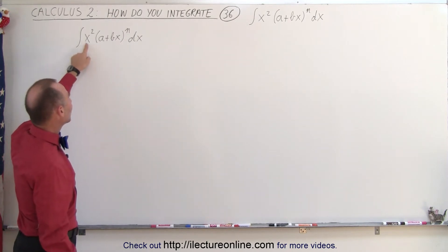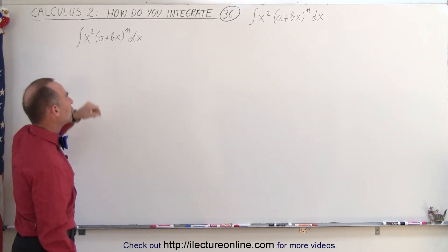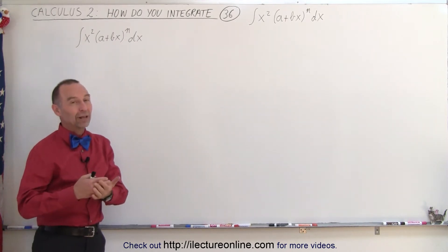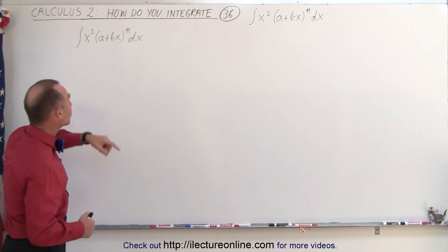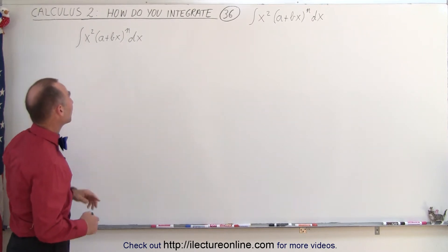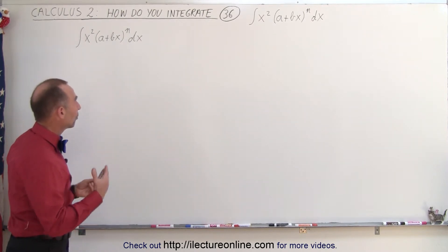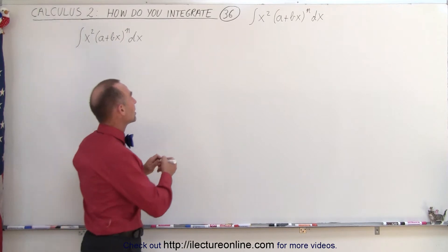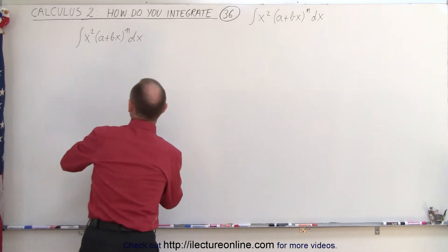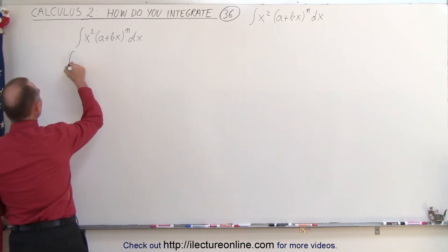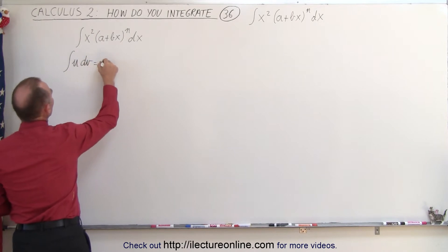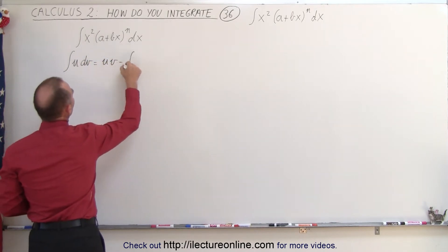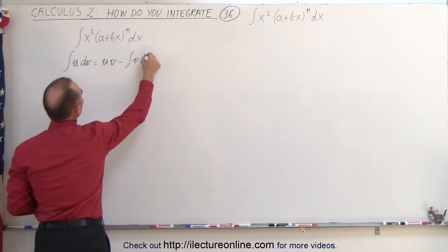One way to get rid of the x squared is to use integration by parts, and we'll have to do it twice because each time you use it, you can get rid of one power of x. So we're going to use the formula: the integral of u dv equals u times v minus the integral of v du.